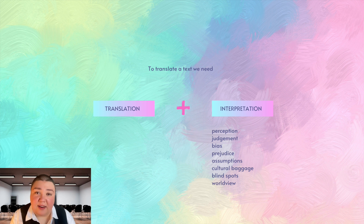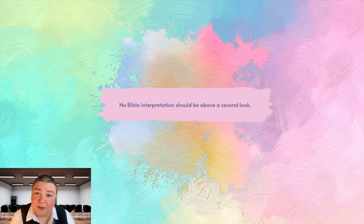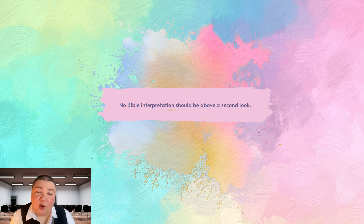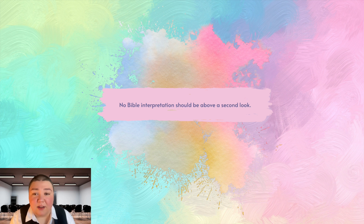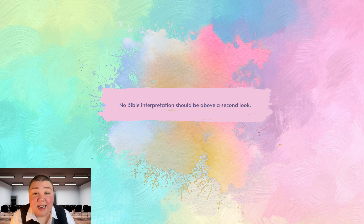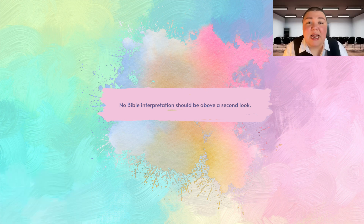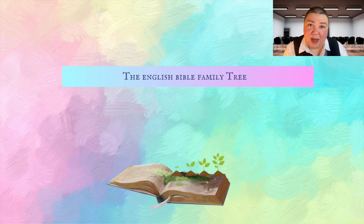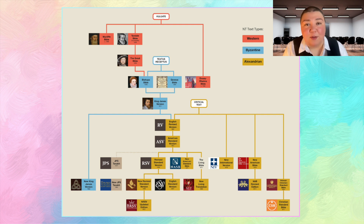The point here is the challenge of conveying the original meaning. In order to translate in a way that conveys meaning, we need a second ingredient — namely interpretation. So to translate a text, we need translation plus interpretation. Where there is room for interpretation, there is room for the variables of personal perception, judgment, bias, prejudices, assumption, cultural baggage, blind spots, and worldview. It is significant to understand that no Bible translation is infallible or perfect — no interpretation should be above scrutiny or a second look, because language, interpretation, and most importantly people are not perfect. This is one of the reasons we're going through so much history today — to get a sense of how historical events and settings affect translators, allowing us to identify some of the presuppositions, political agendas, and cultures of those doing the translating at various points in history. What you see here is a simplified family tree of major English Bible versions.